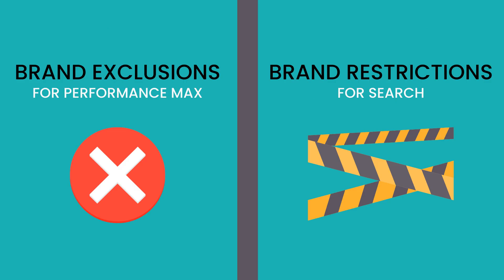In summary: brand exclusions, which is specific to performance max, lets you choose which brands to exclude inside your campaign so you don't serve for any branded queries inside of search and shopping. And brand restrictions, which is specific to search, restricts your broad match traffic to only serve for searches that include the brands that you indicate.